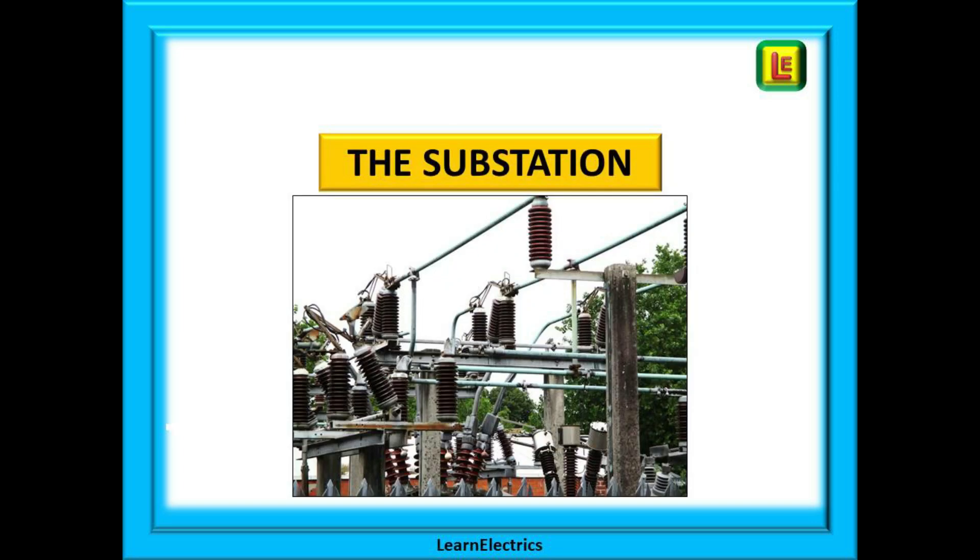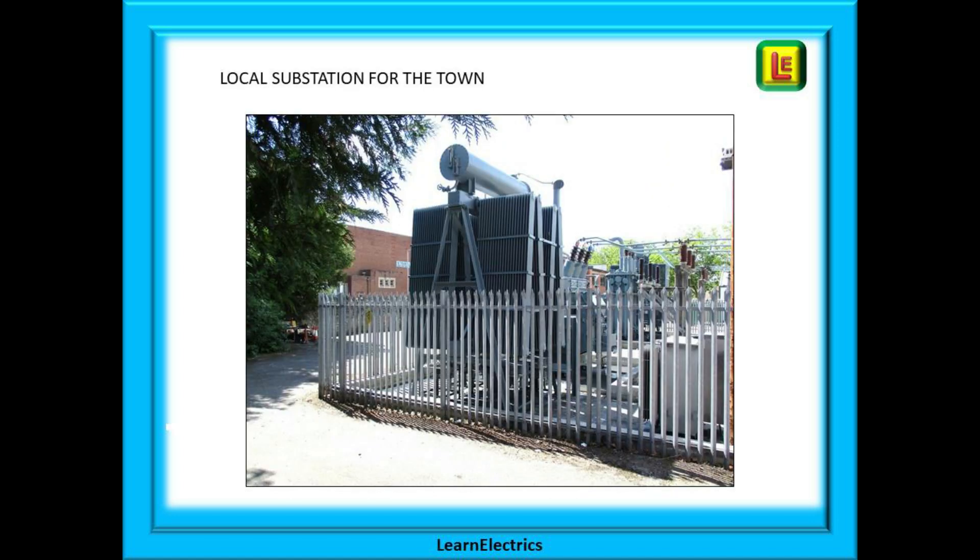We can begin as we should at the substation somewhere on the outskirts of the town or industrial estate. This is the point at which we begin to step down the high voltages of the distribution network into the more familiar 230 volts and 400 volts. These are the usable voltages for our domestic and industrial applications.